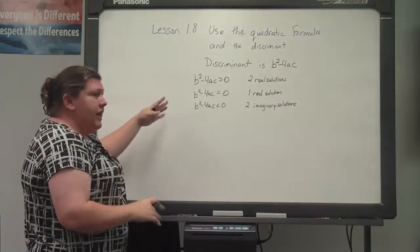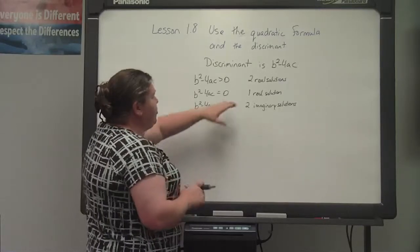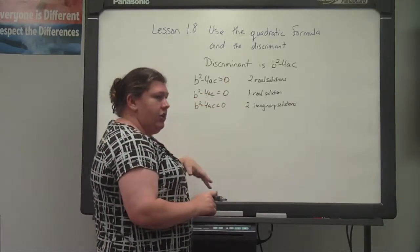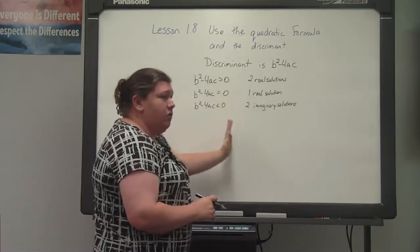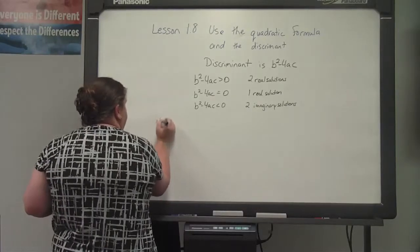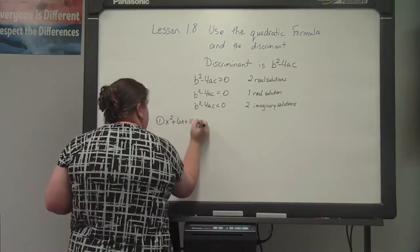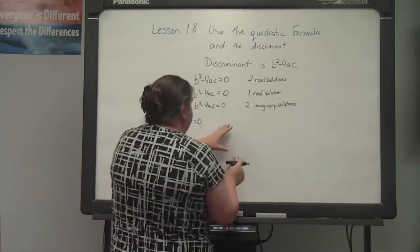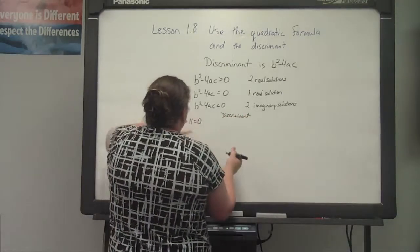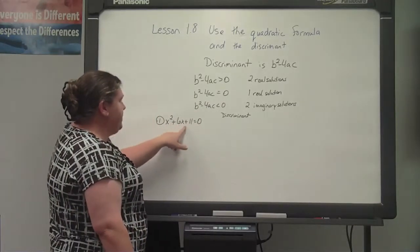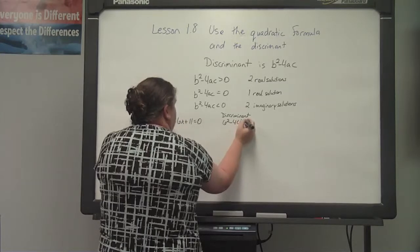If you can use the discriminant, it will help you know which type of answer you're looking for. We just showed you how to solve for two real, one real, and two imaginaries. What we're going to do now is show you how to use the discriminant to find the type, and then solve. My first example is x squared plus 6x plus 11 equals 0. Using the discriminant, b squared is 6 squared minus 4 times 1 times 11.